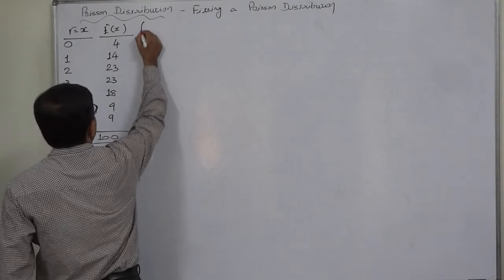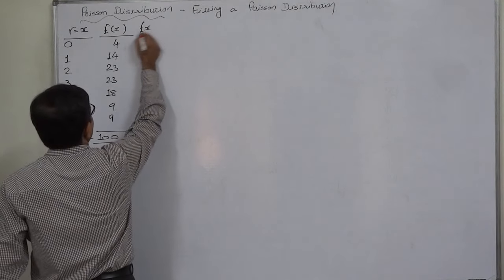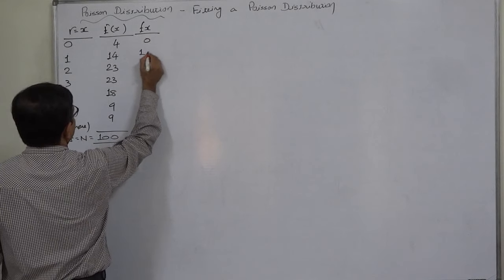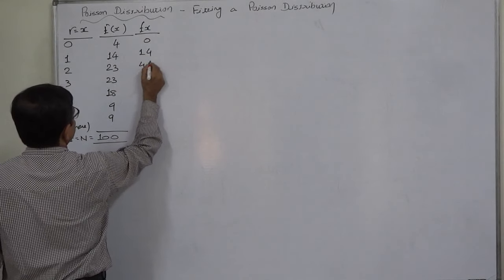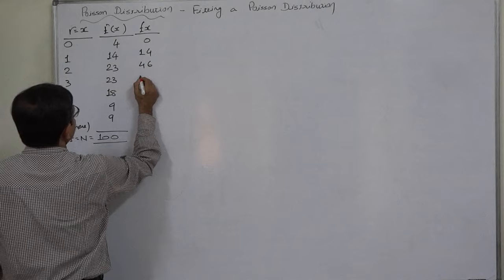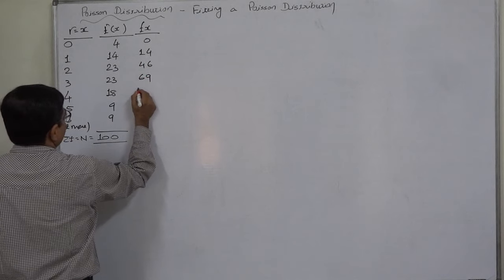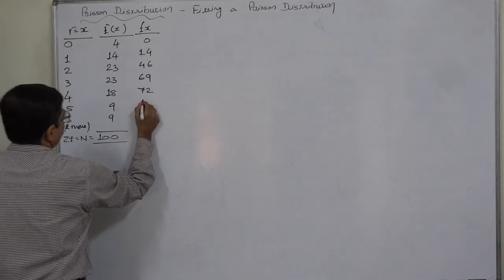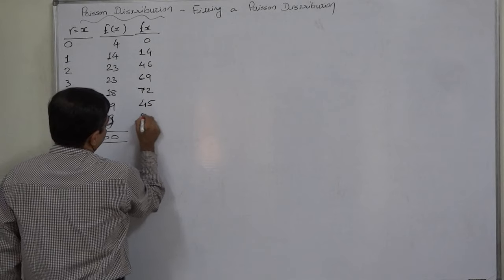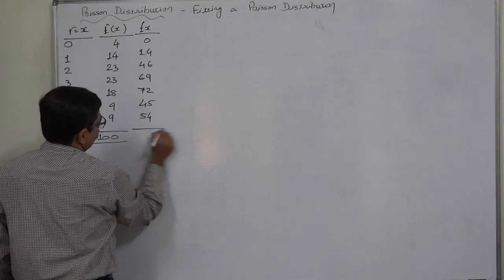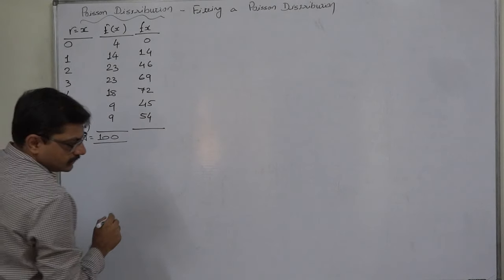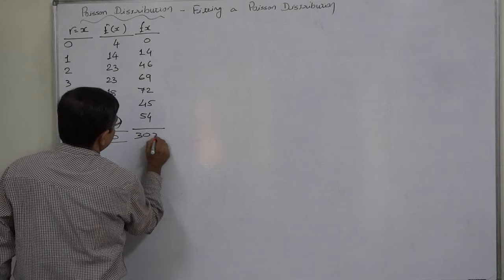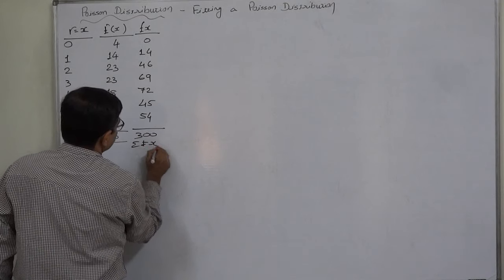So: f×x — 0 into 4 is 0; 14 into 1 is 14; 23 into 2 is 46; 23 into 3 is 69; 18 into 4 is 72; 9 into 5 is 45; and the remaining values give 96 and 54. The summation of these numbers, sigma fx, comes to 300.